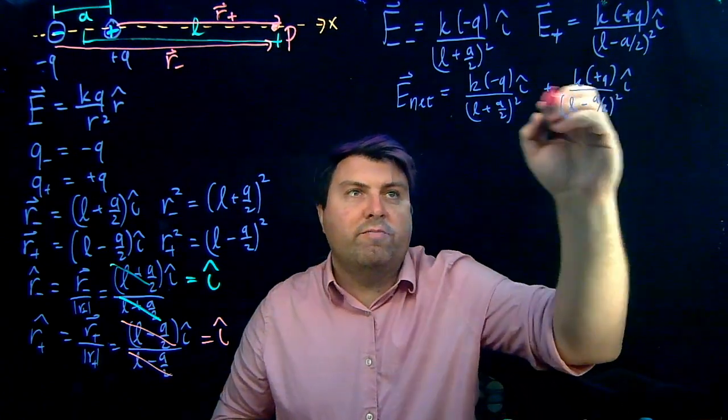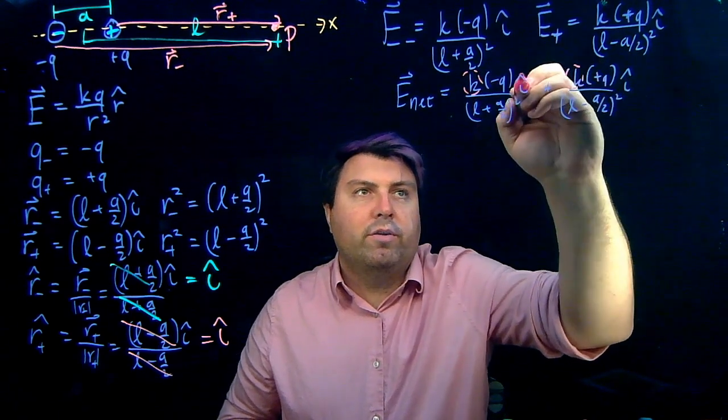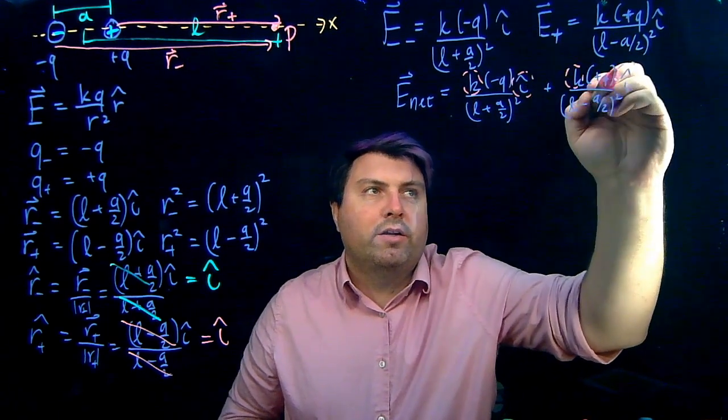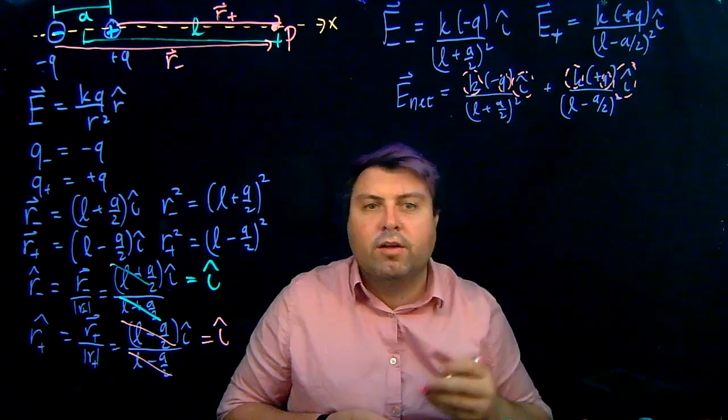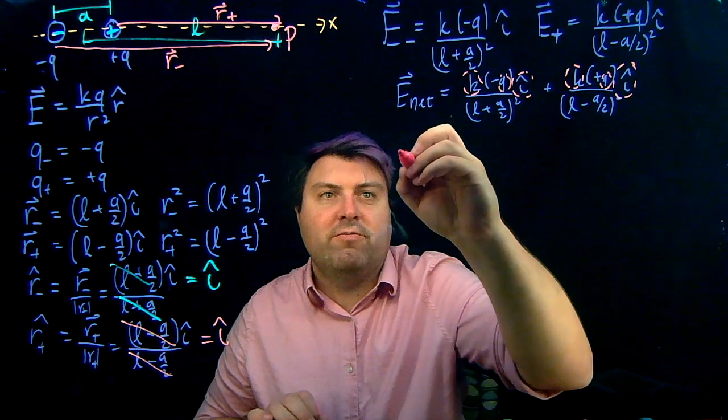So we've got a lot of very similar terms, so let's identify them. We have K for both, we have I hat for both, and we can even have the Q for both, giving us a really nice easy way to do this.